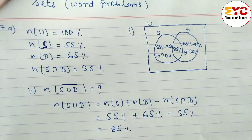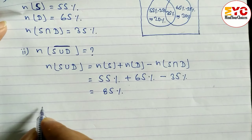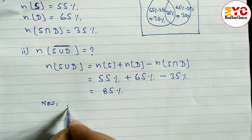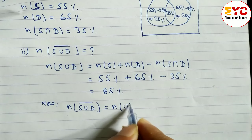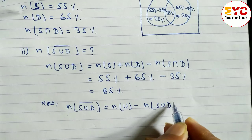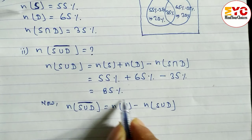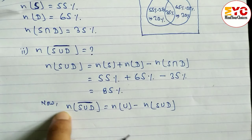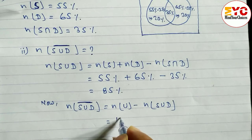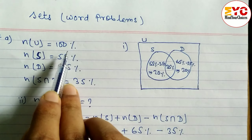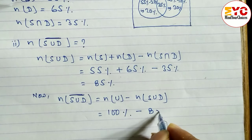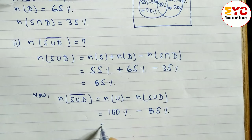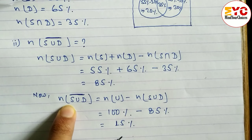We have to find n(S ∪ D) complement. The formula is n(U) minus n(S ∪ D). To find a complement, always subtract from n(U). n(U) is 100 percent — if the question is in percentage, n(U) is always 100 percent. So: 100 minus 85 equals 15 percent. It means 15 percent of people did not like to listen to the song as well as watch the dance.